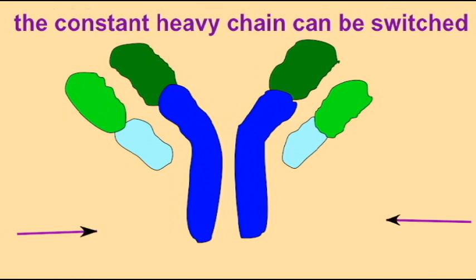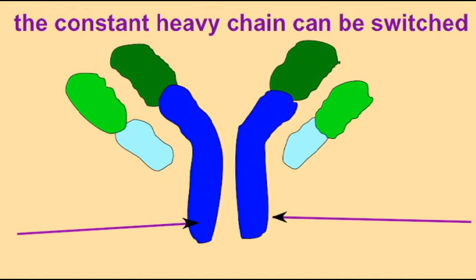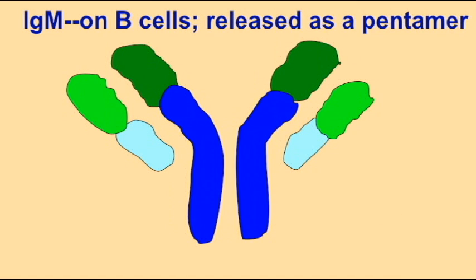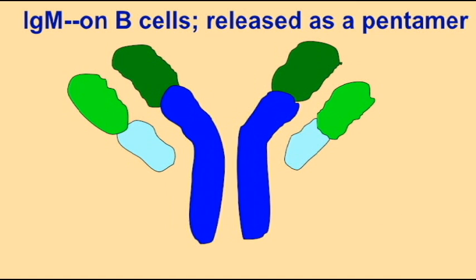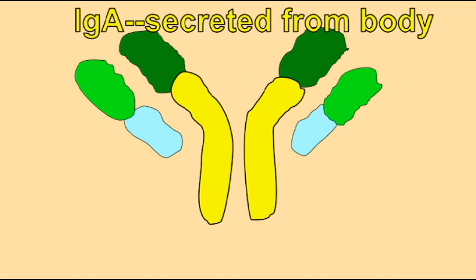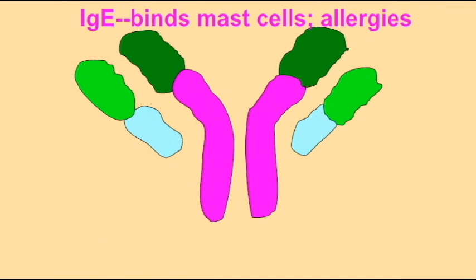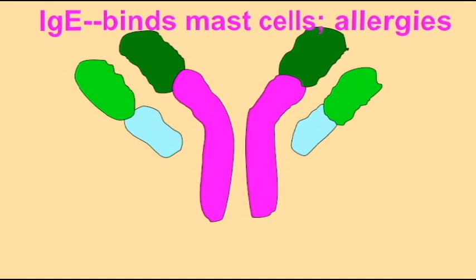IgM is a heavy chain which attaches the antibody to the B cells. IgG is secreted into the blood plasma. IgA is secreted from the body, such as in tears, along the GI tract, and in milk. IgE attaches to mast cells and is involved in allergies.